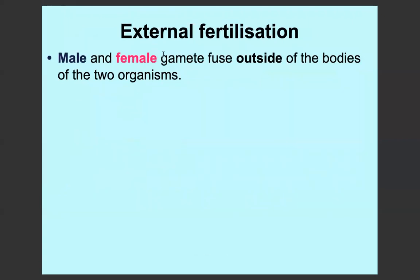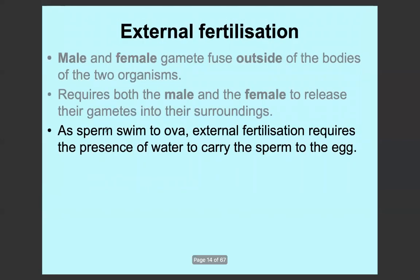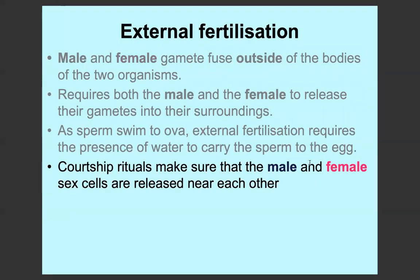For external fertilisation, the male gamete, which is the sperm, and the female gamete, the egg, fuse outside the body of the two organisms. Both the male and the female must release their gametes into their surroundings. The sperm has to swim to the ova, so there needs to be water for external fertilisation to take place — it has to occur in an aquatic environment. The courtship rituals make sure that the male and female sex cells are released near each other, otherwise fertilisation would not occur at all.